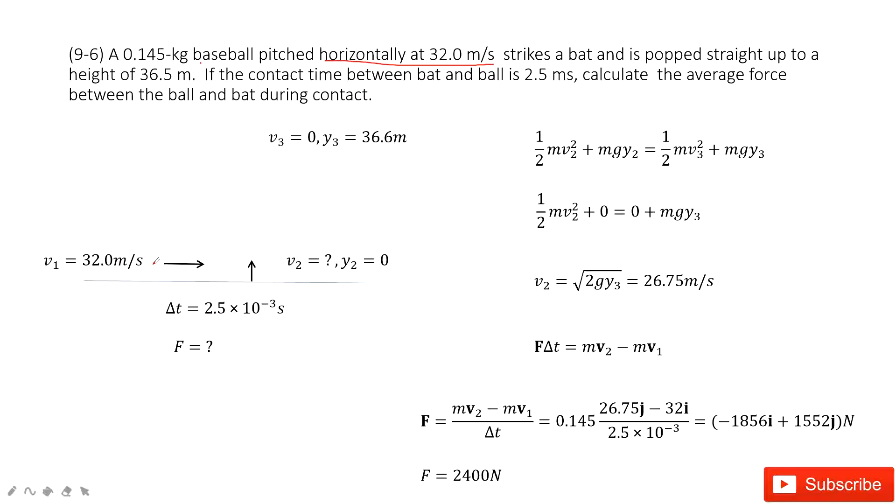So it moves this way. And then it strikes a bat. And then finally, it moves straight up. That means the velocity v2 straight up. But how much, we don't know. And then it just moves up until the peak.